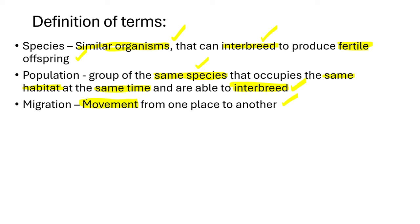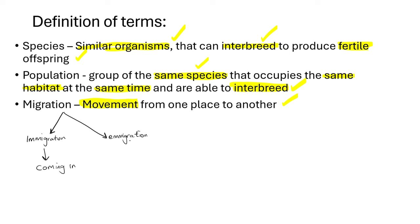Migration can be differentiated into two types: immigration and emigration. Immigration means moving into a population — coming in. Emigration means moving out of a population. These are the two types of migration.